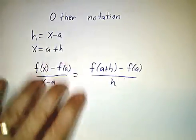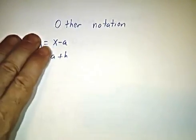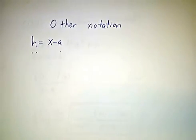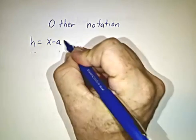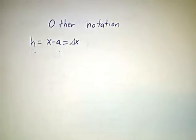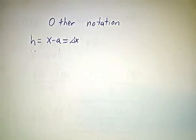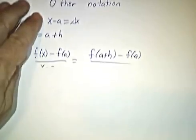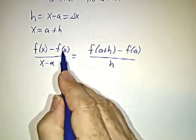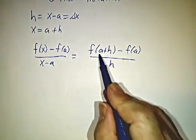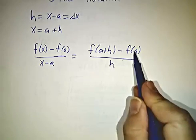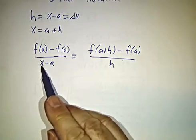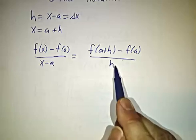Now, another useful bit of notation is to define this quantity h. h is x minus A, which is also delta x. Well, if h is x minus A, then x is A plus h. So when we write f of x minus f of A, we could write it as f of A plus h minus f of A. And A plus h minus A is just h.